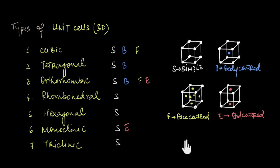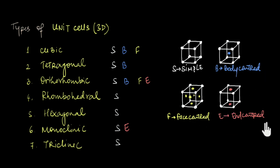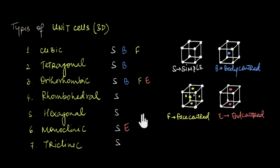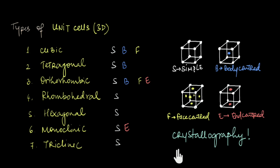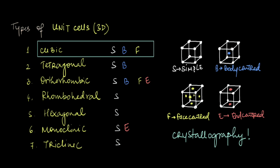In the last video we saw that the unit cell of any crystal can only have one of seven different shapes. On top of that, these unit cells could either be simple, body-centered, face-centered, or hand-centered. However, not all systems can have all four types — some unit cells were identical to each other — so we were ultimately left with 14 different types. In this series of videos we are going to focus only on the cubic system.